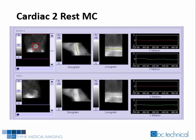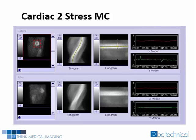Cardiac II's resting study showed less than one pixel of motion before automatic motion correction was applied. The motion-corrected dataset displayed the study with less than one pixel of motion — the same results as the non-motion-corrected. Cardiac II's stress study showed greater than three pixels of motion before automatic motion correction was applied. The motion-corrected dataset displayed a study with almost zero pixels of motion, correcting three pixels of motion.